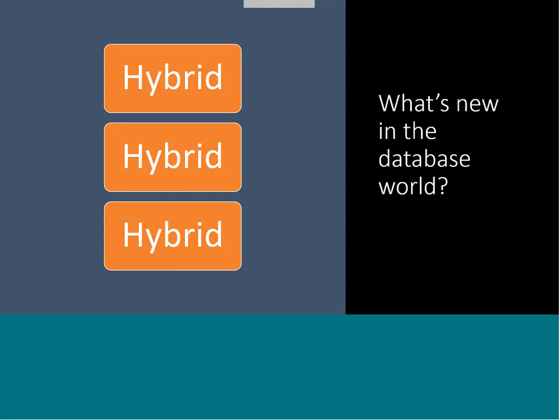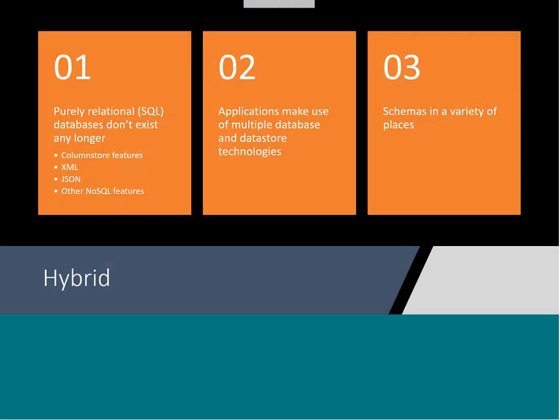So what's new in the database world? The big distinction for me is hybrid. What I mean by hybrid is that purely relational — and in the whole SQL versus NoSQL world, the NoSQL people came up with that originally to mean non-relational databases, using SQL to mean non-relational — the concept of a purely relational database really doesn't exist anymore. Most of the major database vendors have column store features. They support XML data types, JSON data types, and other kinds of NoSQL non-relational features right inside their relational database. And that's been going on for a long time, but it's becoming even more polyglot and polyschematic.